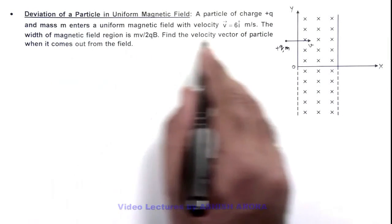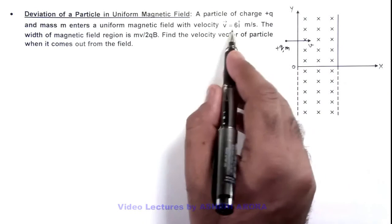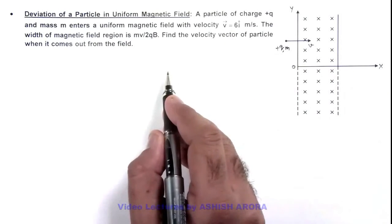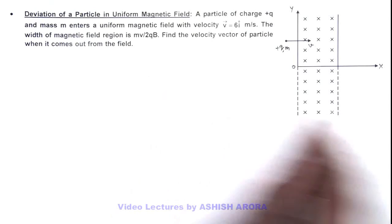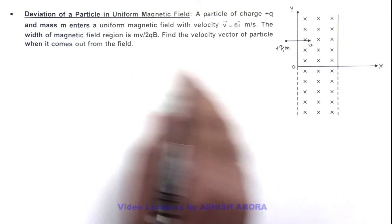The particle enters a uniform magnetic field with velocity vector 6i m/s. The width of this magnetic field region is mv/2qB, that is half of the radius of its circle.